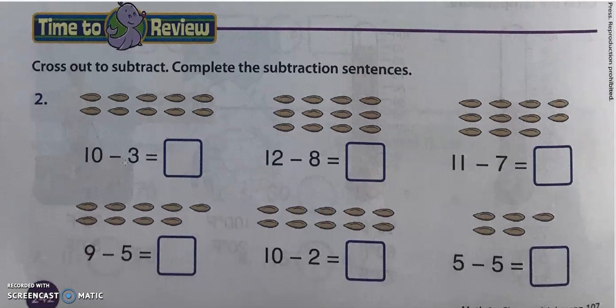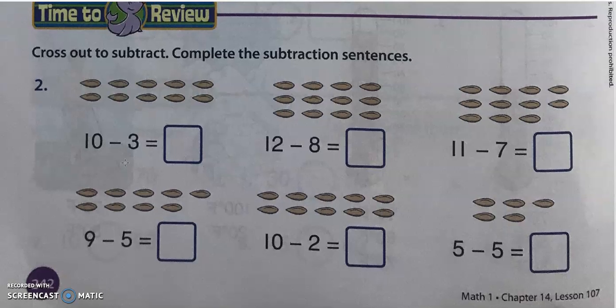From the bottom of this page, it's a reviewing page. What you need to do is you will have to cross out to subtract and then complete the subtraction sentences. So 10 minus 3, you'll have to subtract 3 of these rice or barley, just cross out 3. Then how many do you have left? 7. If you cross out 8 from 12, you have 4. If you cross out 7 from 11, you have 4.